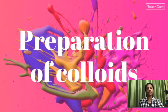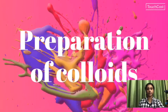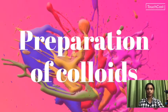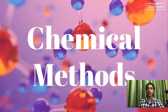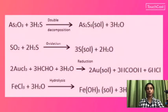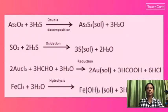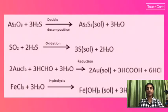Preparation of Colloids — first method: Chemical Methods. Through chemical reactions we can produce sols, and the process by which colloids are formed is called chemical methods. One example is double decomposition: arsenic oxide reacted with hydrogen sulfide produces arsenic sulfide sol.